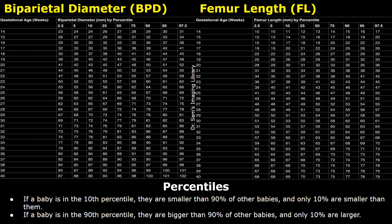Hello everyone, this is Dr. Sam. Today we will learn what percentiles are related to fetal biometric parameters in obstetric ultrasound. Percentiles are used to compare a baby's growth to that of other babies of the same age. It's a way of seeing whether a fetus is growing bigger, smaller, or about the same size as expected for their gestational age. You hear terms like 10th percentile, 50th percentile, 90th percentile, etc.